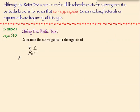Let's try this in the first example. Although the ratio test is not a cure for all ills related to tests for convergence, it is particularly useful for series that converge rapidly. Series involving factorials or exponentials are frequently of this type, and that's exactly what we have here. I'm going to identify the a sub n term, which is 2 to the n over n factorial.